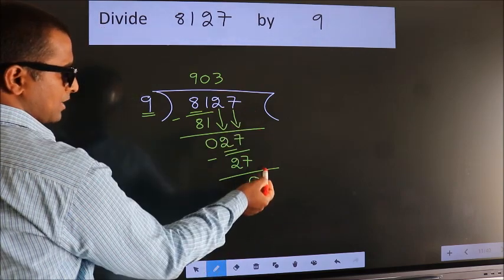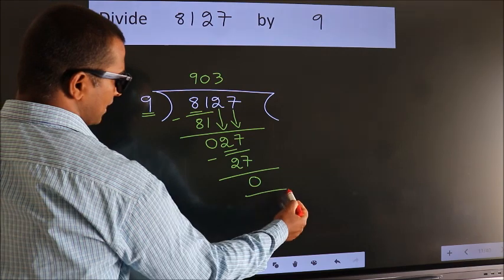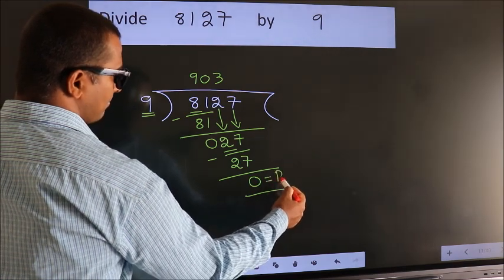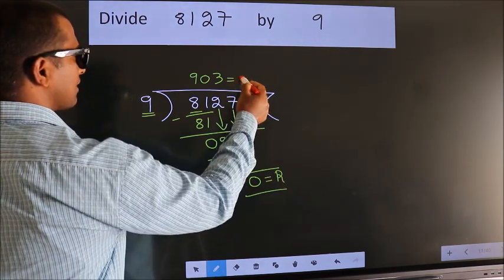No more numbers to bring down. So we stop here. This is our remainder. This is our quotient.